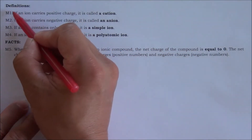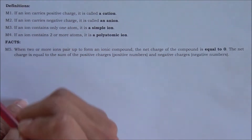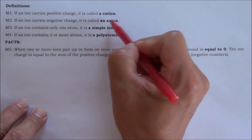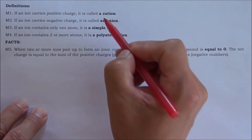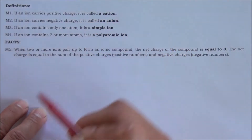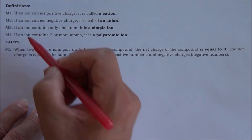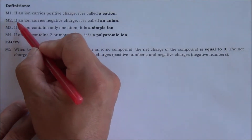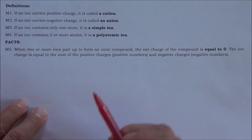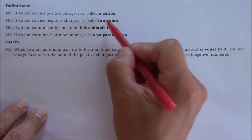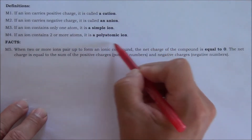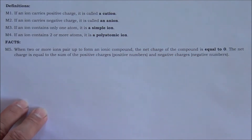An ion cannot be both a cation and an anion at the same time. Similarly, an ion cannot be both a simple ion and a polyatomic ion at the same time.